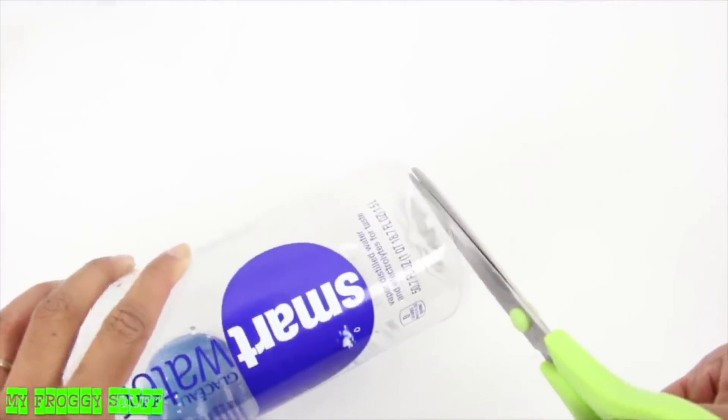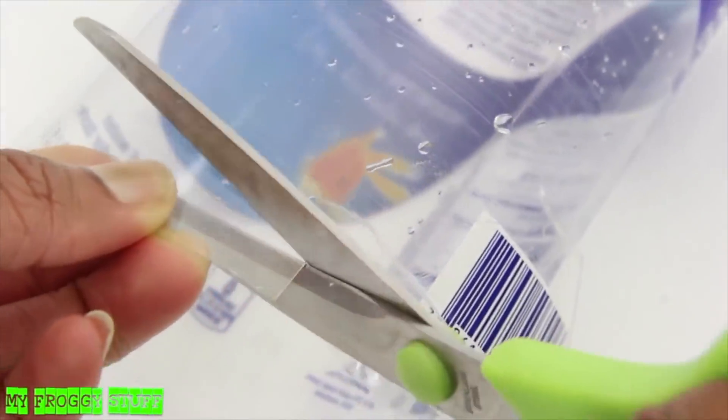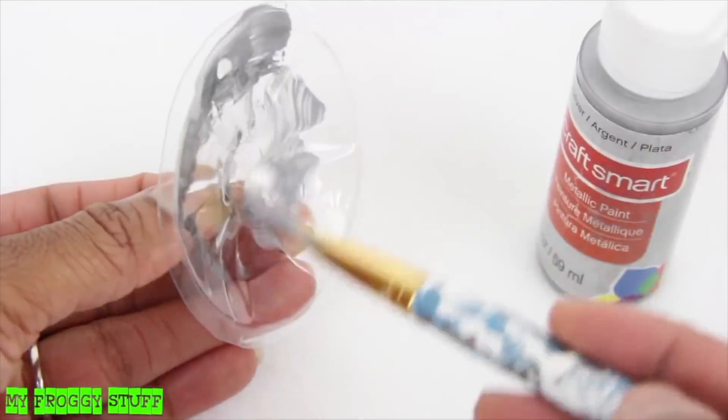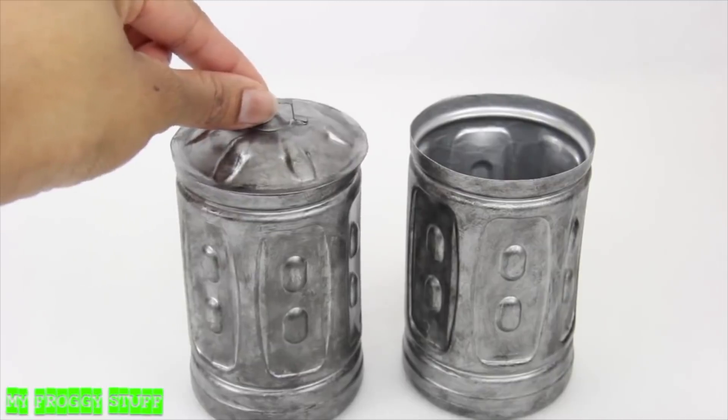Cut the bottom off of another water bottle. Cut a small strip off of the water bottle to make a handle. Glue it on top. Paint it. Then place it on top of the trash can.